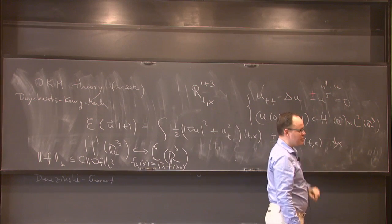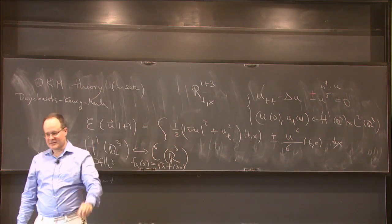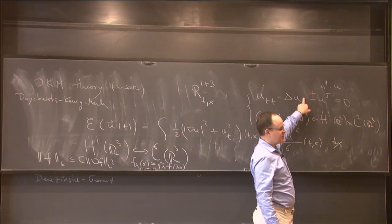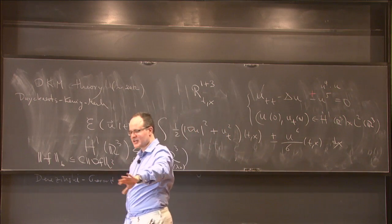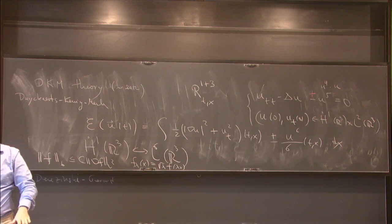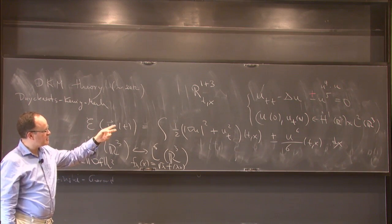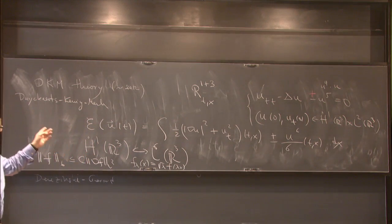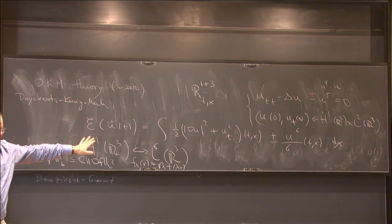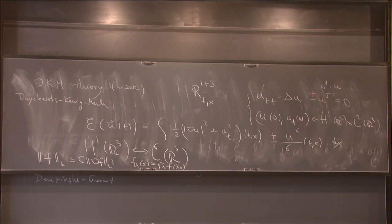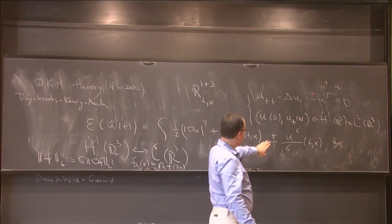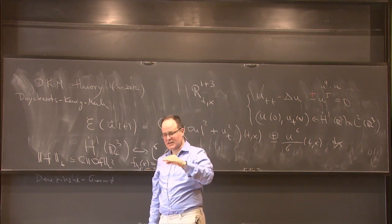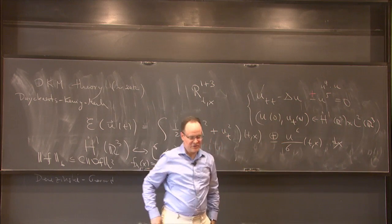If you add a mass term — write plus u — then all the scattering theory is known. But it's a delicate thing: nobody knows what the scattering theory is for u³ without the mass term. That's intimately connected to why we have soliton resolution at least radially for the critical problem, but not subcritically without the mass term. For the defocusing case, we have a satisfactory understanding up to power 5 — meaning up to u^6 in the energy with a plus sign.